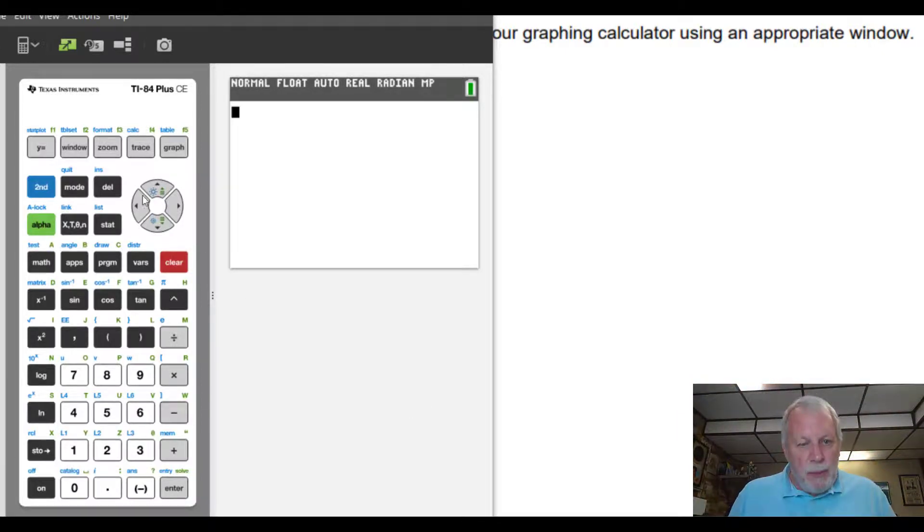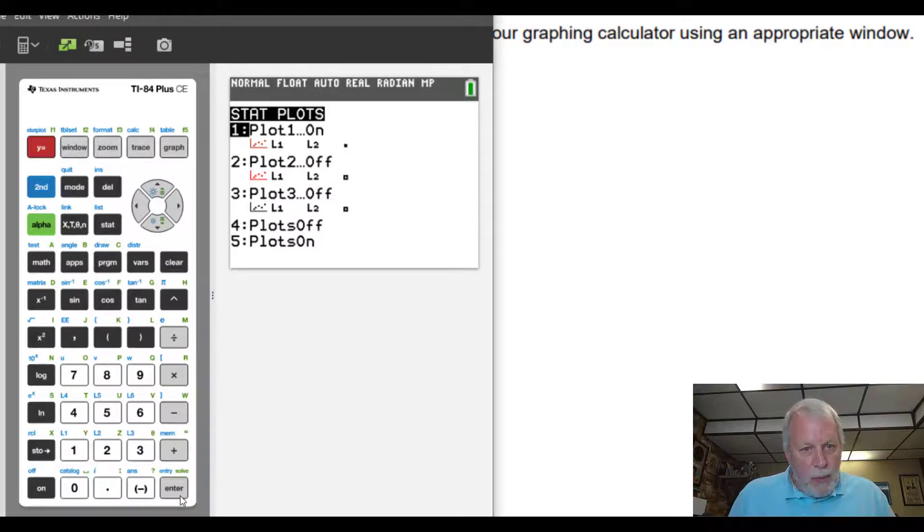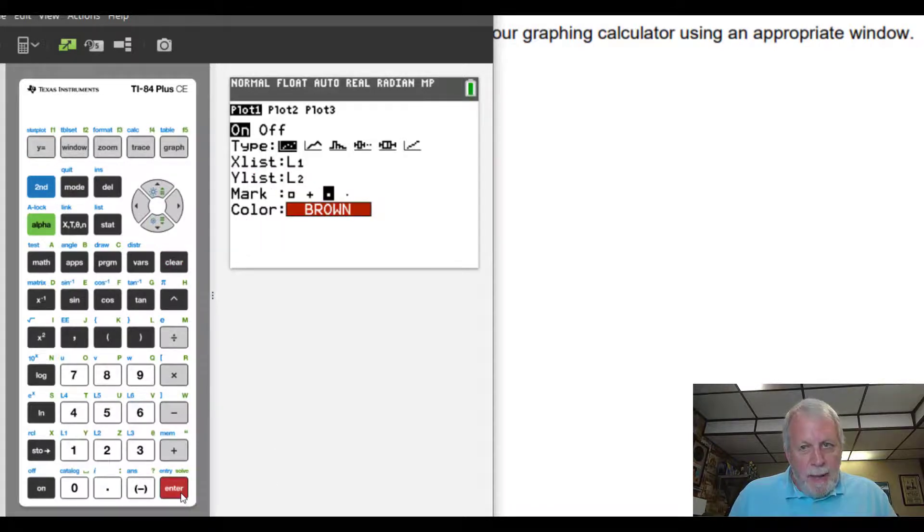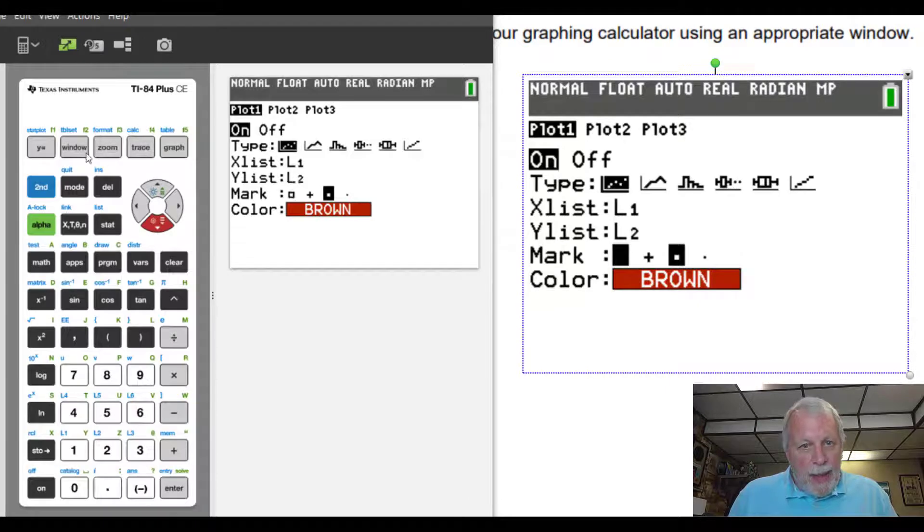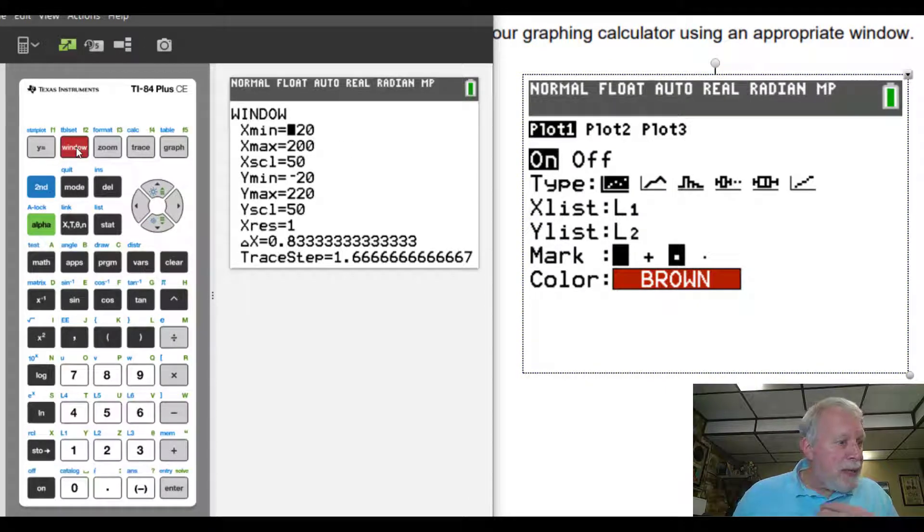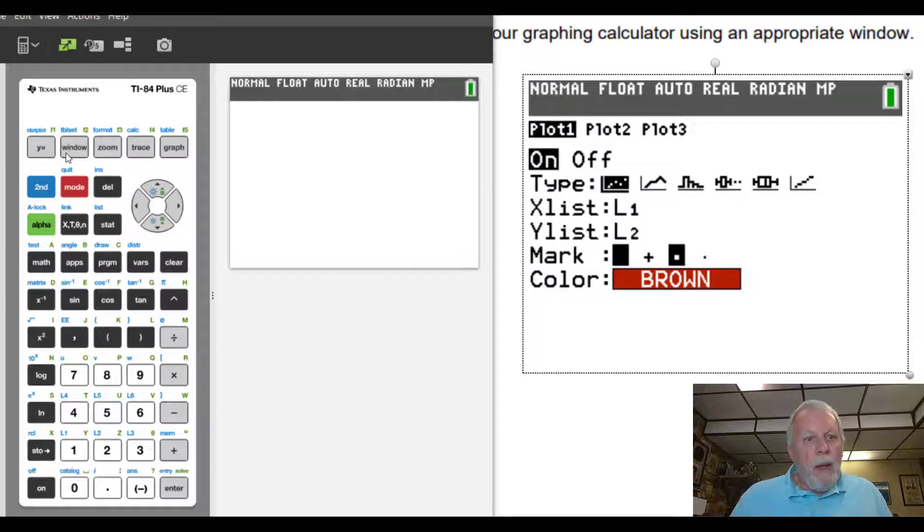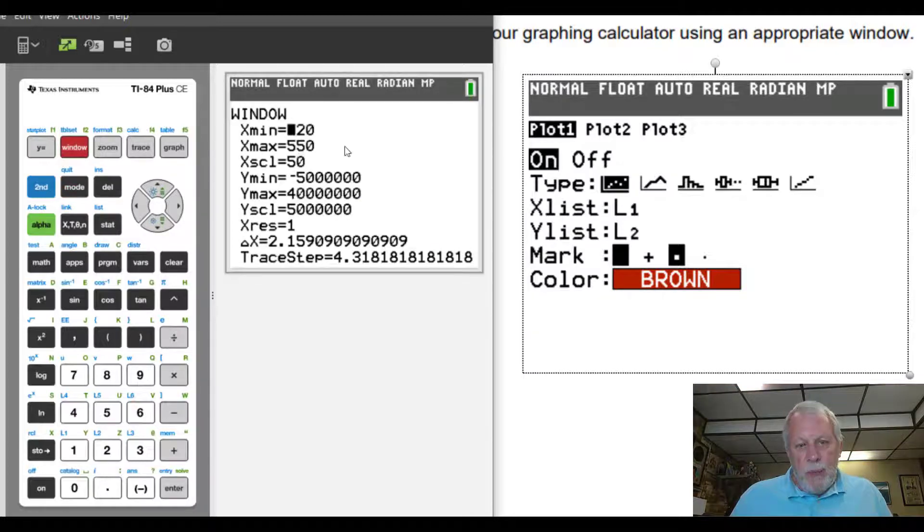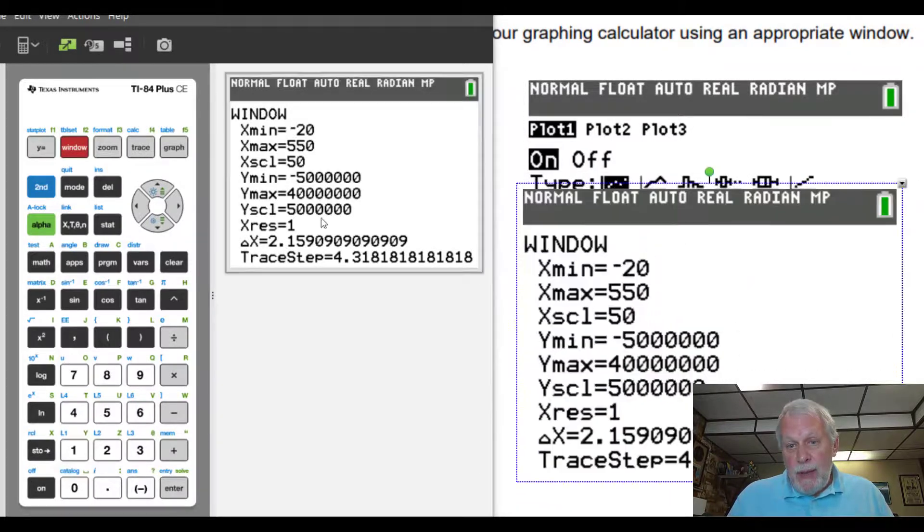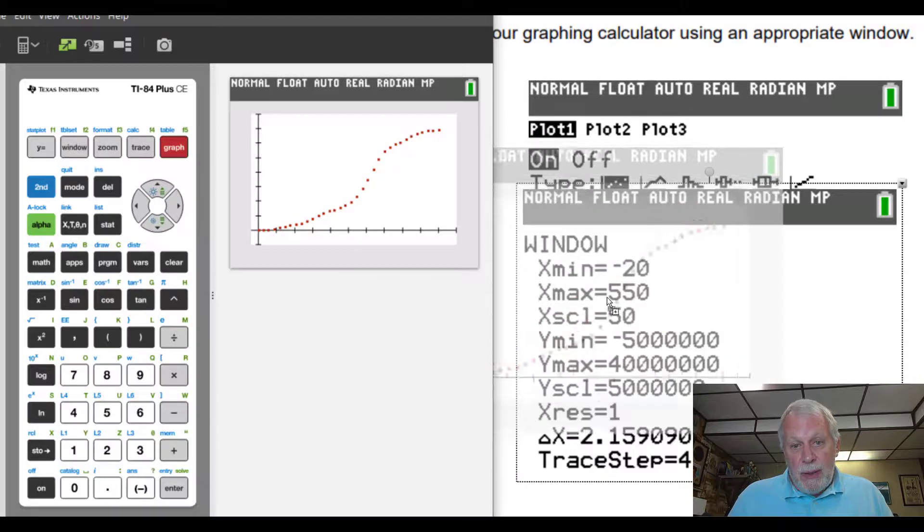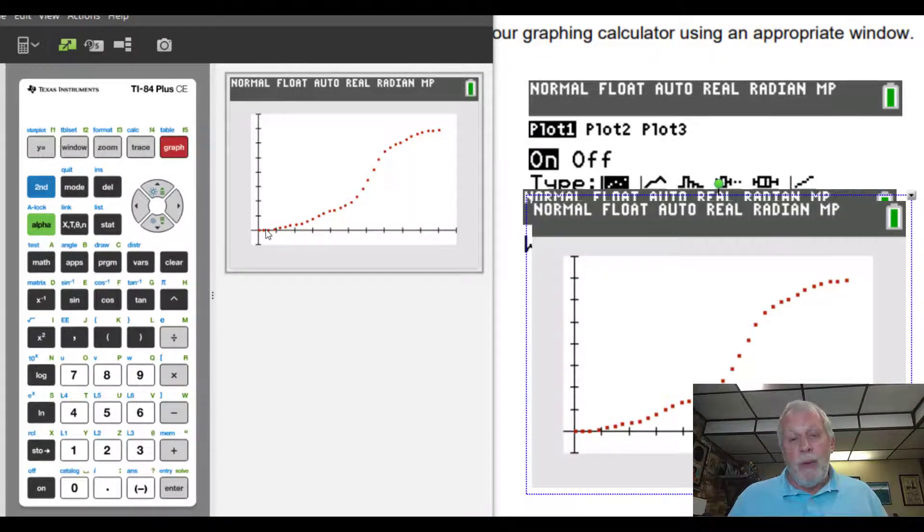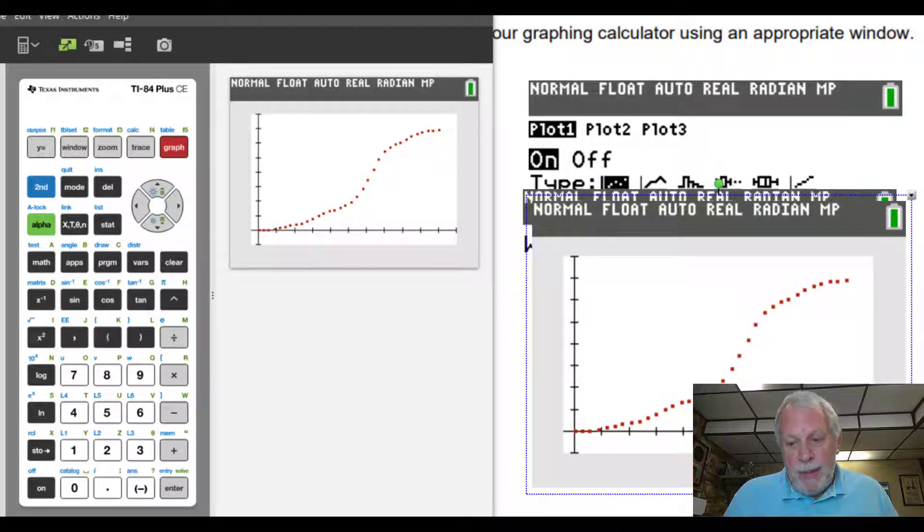So let's go ahead and plot this using an appropriate window. So again, second y equals, the stat plot is on. It's going to be L1 and L2. Again, it'll be brown. So we've got that. As far as a window goes, this again, by guess and check what the window would be. So for the window, I went negative 20 to 550 in steps of 50. But for the y min and max, I went from negative 5 million to 40 million showing every 5 million, okay, so that I could see the data. And now when I graph it, you can see the data shows up pretty well, very similar to what we saw on the website.